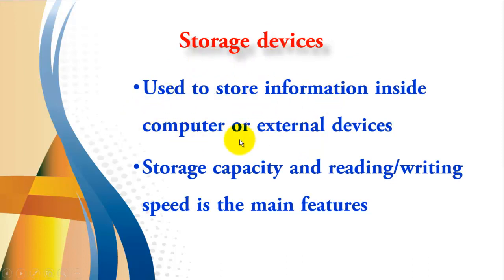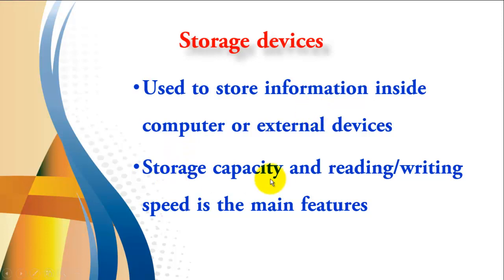If you want to save or store information inside a computer, you are going to use the hard disk. External devices include CDs, DVDs, Blu-rays, flash disks, and so on. Storage capacity and read/write speed are the main features used to classify storage devices. To know the ability of your storage device, you need to know its capacity and its reading or writing speed.